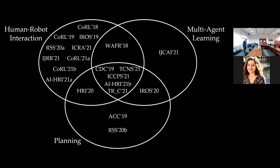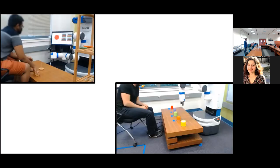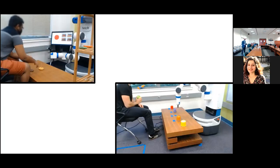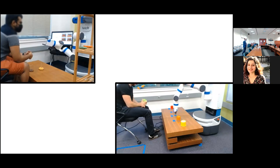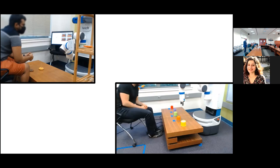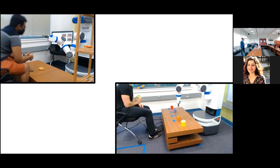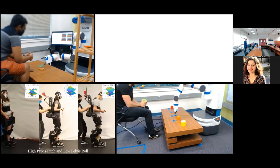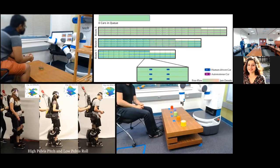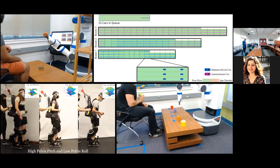Today I'm going to focus mostly on human learning — learning the humans' objectives — and at the end I'll briefly talk about the intersection between these three areas: using human models to better plan policies. Although most of the time I'll talk about robot collaboration examples, these ideas are applicable in many different domains, for example recommendation systems, exoskeleton gait optimization, or traffic optimization by routing.